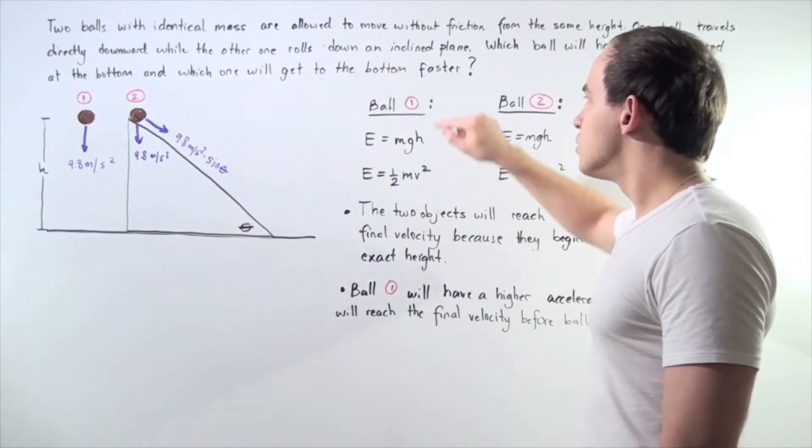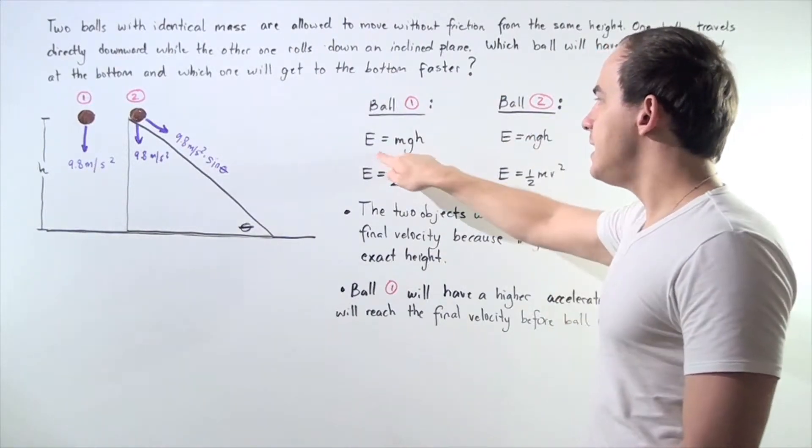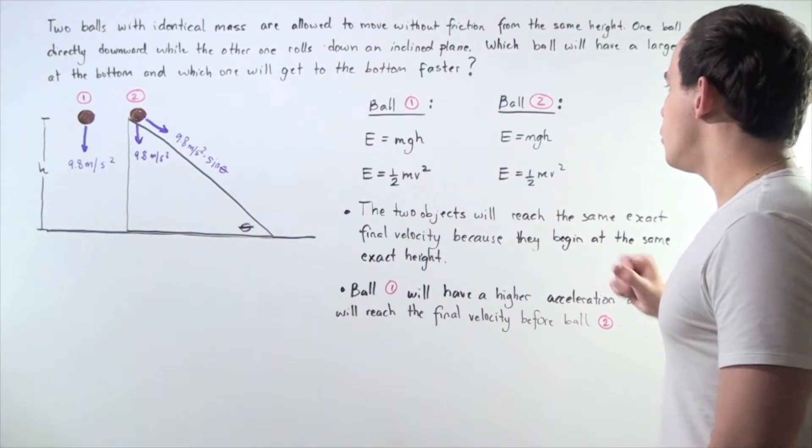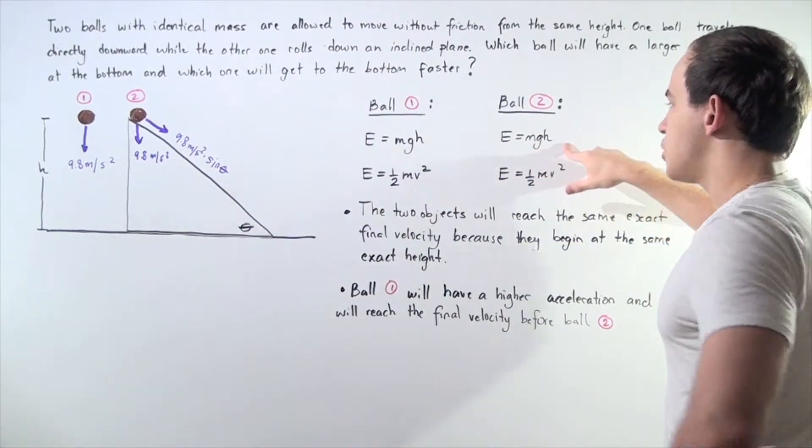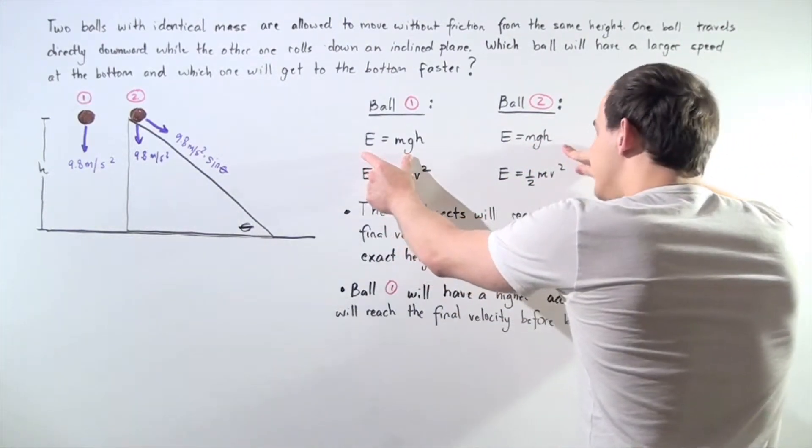So, let's say it's E. For ball number one, we have E equals mgh. And for ball number two, we have E equals mgh. So, these values are identical.